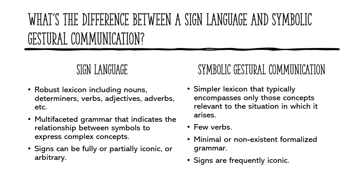What's the difference between a sign language and a symbolic gestural communication? Sign language has a robust lexicon that includes nouns, determiners, verbs, adjectives, adverbs, etc. It has a very multifaceted grammar that indicates the relationship between symbols, allowing the user to express very complex ideas. You can combine and recombine these symbols in an infinite number of ways to express any number of concepts and ideas.